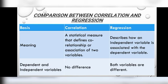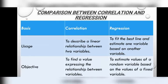In correlation, both variables are different, whereas in regression both variables are also different. Correlation is used to describe a linear relationship between two variables. Regression is used to fit a best line and estimate one variable based on another variable.